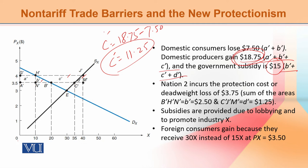Government subsidy is B-bar + C-bar + D-bar۔ D-bar نکالیں: ½ × base 5 × height 0.5، اور اسے add کریں۔ Subsidy کی form میں $15 state کی طرف سے جاتا ہے۔ Consumer کو loss ہوتا ہے $7.50، اور producer واحد player ہے جسے فائدہ ہو رہا ہے — that is $18.75.